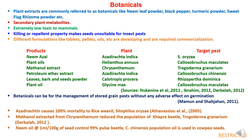Botanicals can be used for the management of stored grain pests without any adverse effect on germination. As per Mamun and Sahaja (2011), azadirachtin derived from the neem tree causes 100% mortality to rice weevil (Athenseo et al., 2005). As per Darbala (2012), methanol extracts from chrysanthemum reduce the population of khapra beetle, and neem oil at the rate of 1 ml per seed controls 99% pulse beetle population in cowpea seeds.